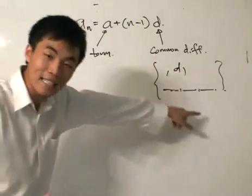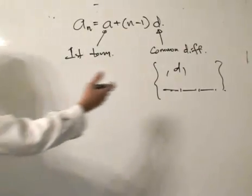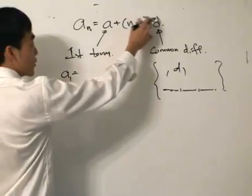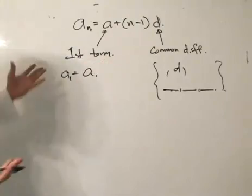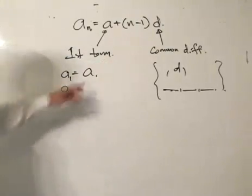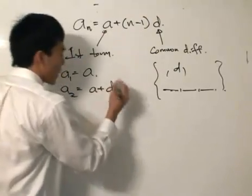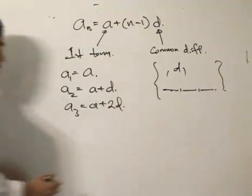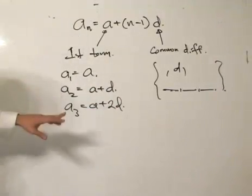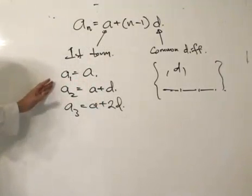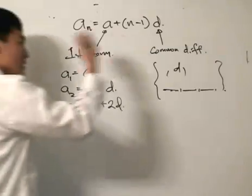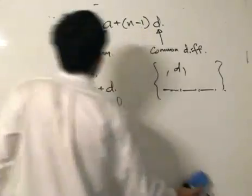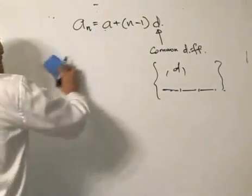Why is that so? We just substitute values: for a1, we get 0 times d, so we just get a — the first term. For a2, we add one times d. For a3, it equals a plus 2d, which is two common differences from the first term, or one common difference from the preceding term a2. So basically, think of the numbers in the sequence as separated by d, the common difference. That is the function of the sequence and should be easy enough to understand.